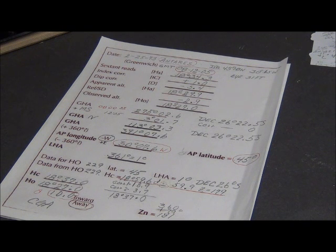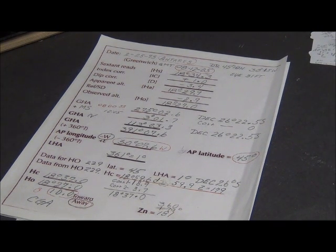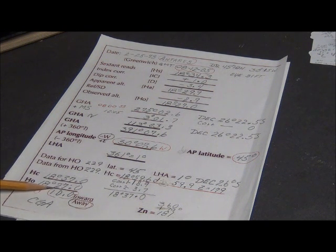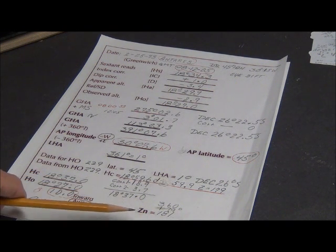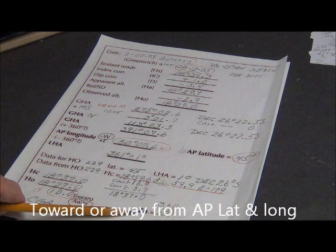Now that we have the site form filled out, we still have a few jobs to do in order to plot. One thing we have to do is make a decision as to whether this 10.0 miles is towards or away from the bearing of the body.